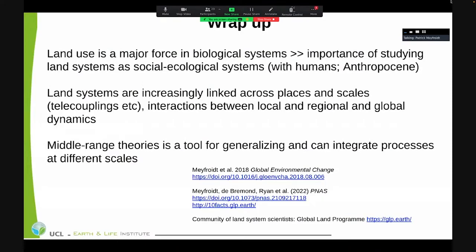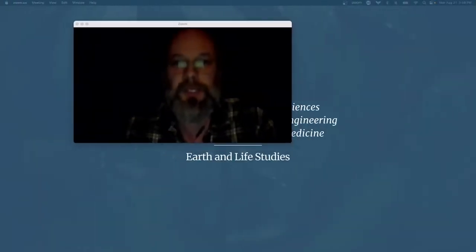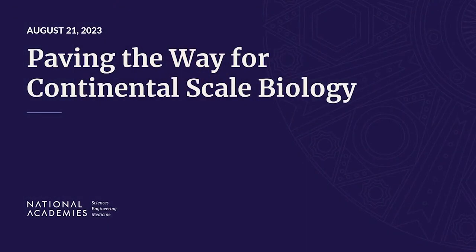I just want to wrap up with these ideas: land use is a major force in biological systems, so I think it's important for all biologists to account for that. There are increasingly clear linkages across places and scales, and we try to develop tools like middle-range theories to generalize and integrate these processes at different scales.